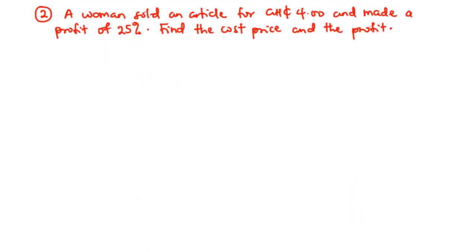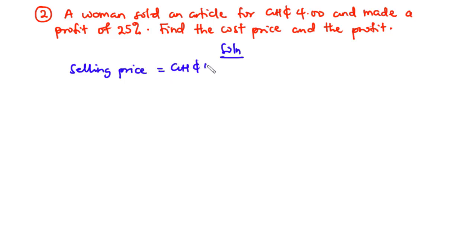Question two: A woman sold an article for 4 Ghana cedis and made a profit of 25%. Find the cost price and the profit. We are told the selling price is 4 Ghana cedis and the profit percent is 25%.